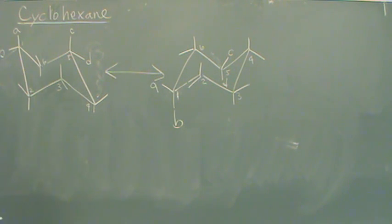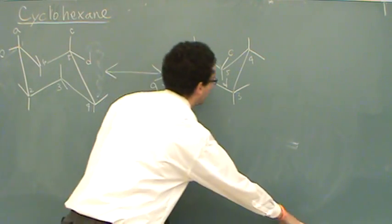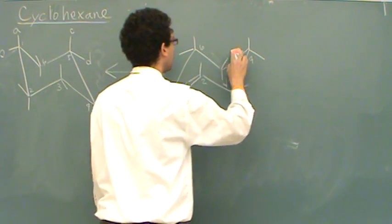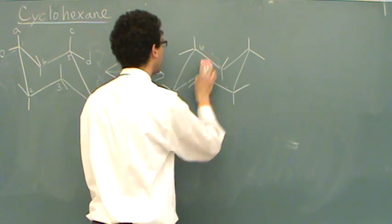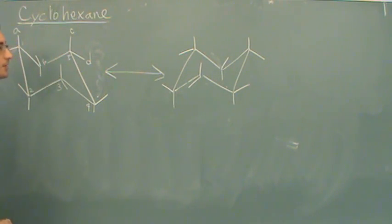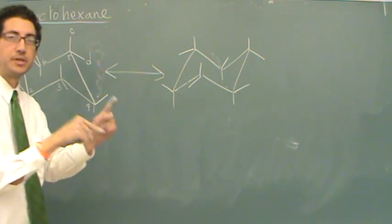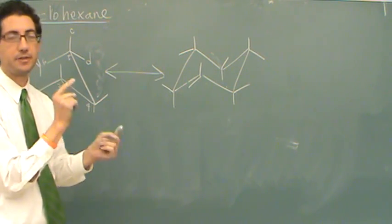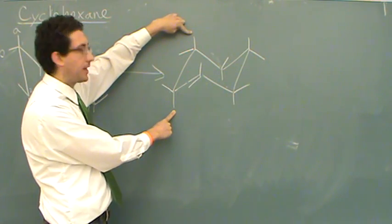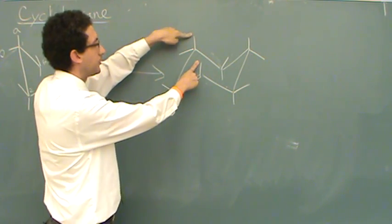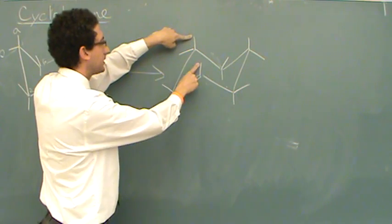One other thing you might want to know is what's cis and what's trans, because we often use cis-trans language when talking about cyclohexane. Trans is pointing in opposite directions; cis means they're next to each other pointing in the same direction. So if you look at these two, those are trans — they're pointing in opposite directions. These would be cis because they're pointing in the same direction. Let's try another: this is trans; if they point in the same direction, cis. This would be trans.